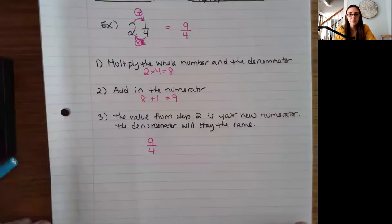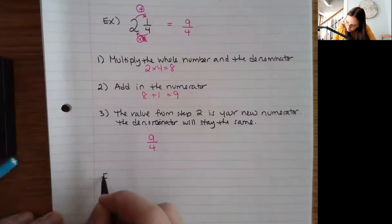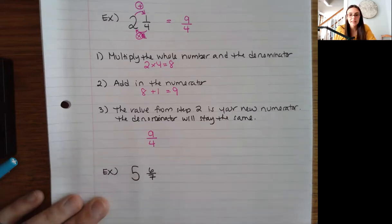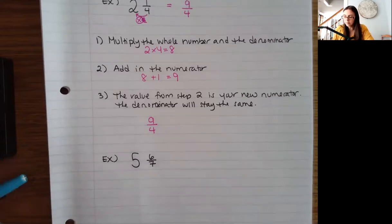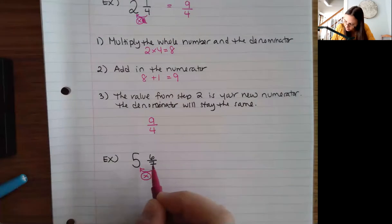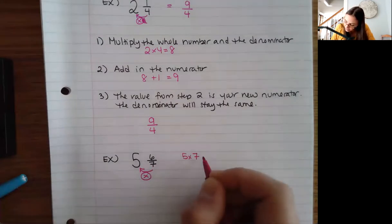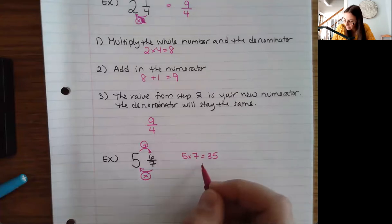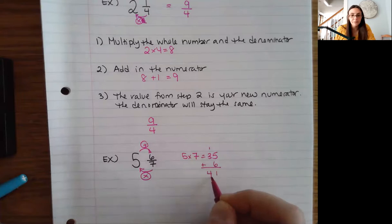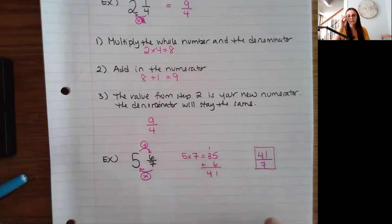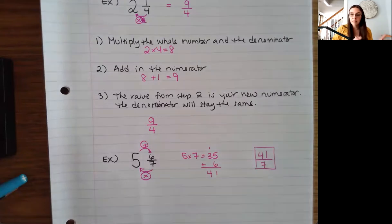Let's do another example: five and six sevenths. We multiply the whole number and the denominator: five times seven is 35. Then we add in the six from the top: 35 plus six is 41. So 41 is our new numerator and our denominator stays the same at seven, giving us forty-one sevenths. It's easy to go from a mixed number to an improper fraction — useful because improper fractions tend to be easier to do calculations with.